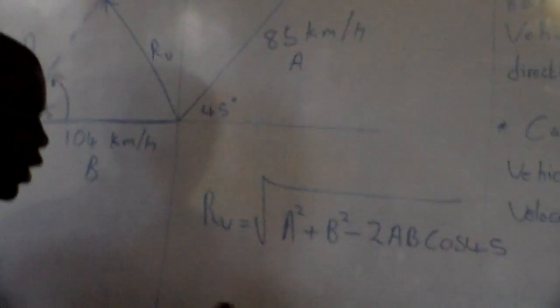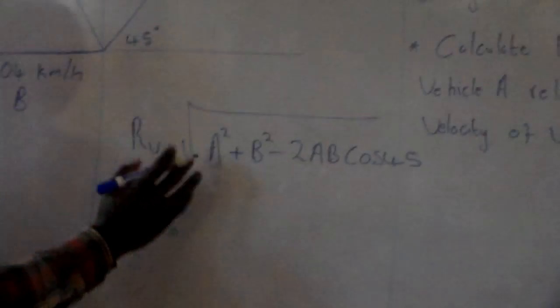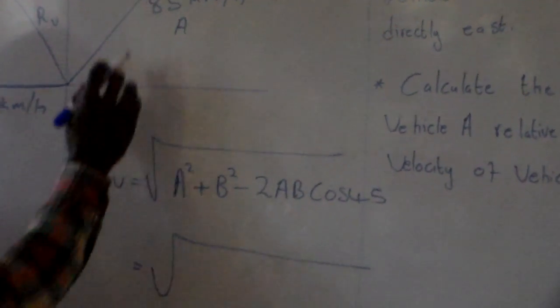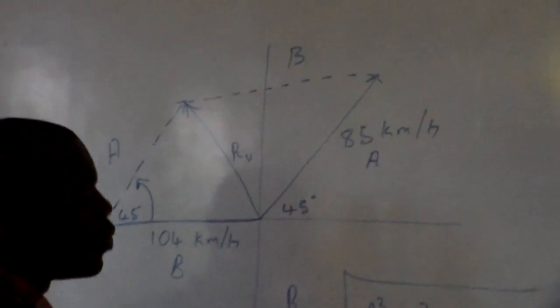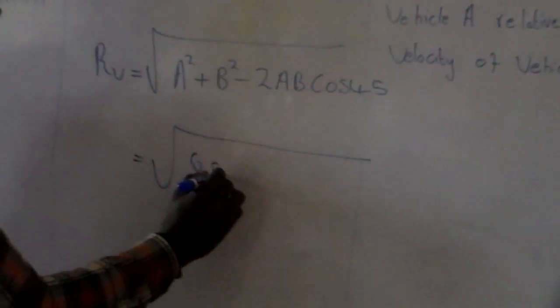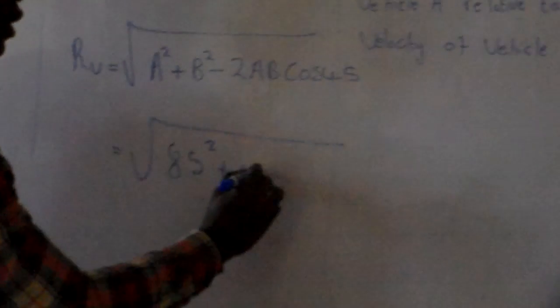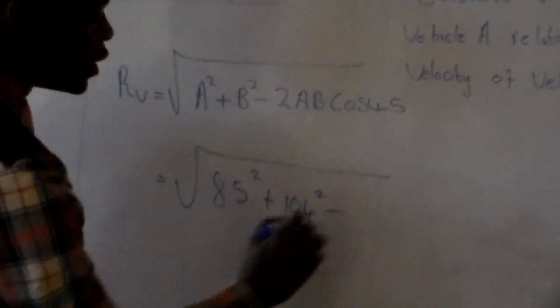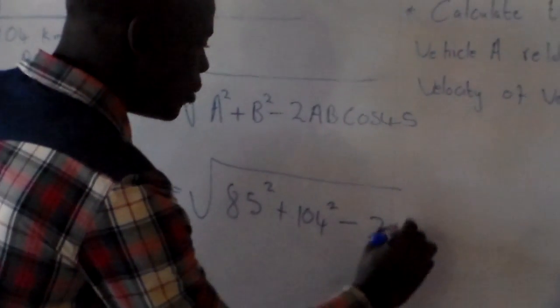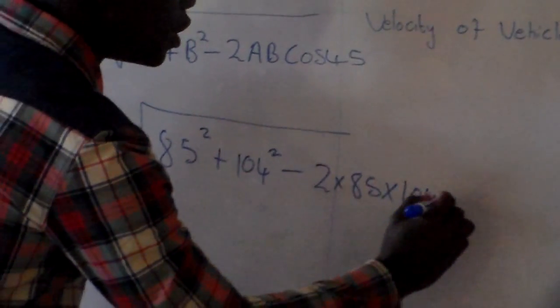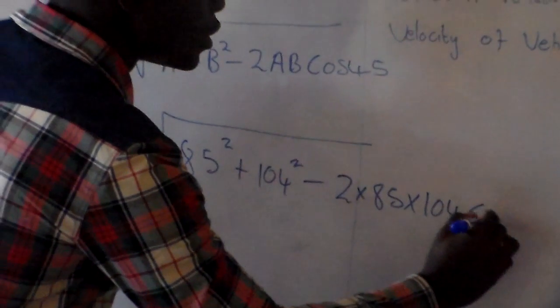We now substitute the values. The relative velocity equals the square root of 85 squared plus 104 squared minus 2 multiplied by 85 multiplied by 104, times cosine 45 degrees.